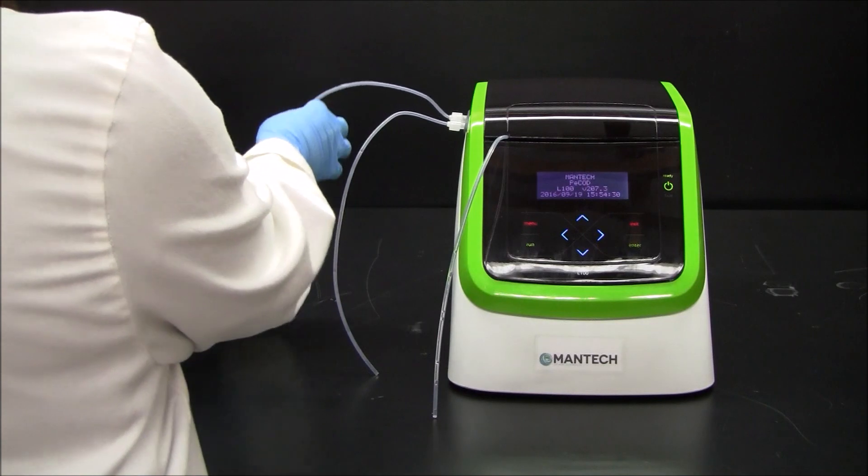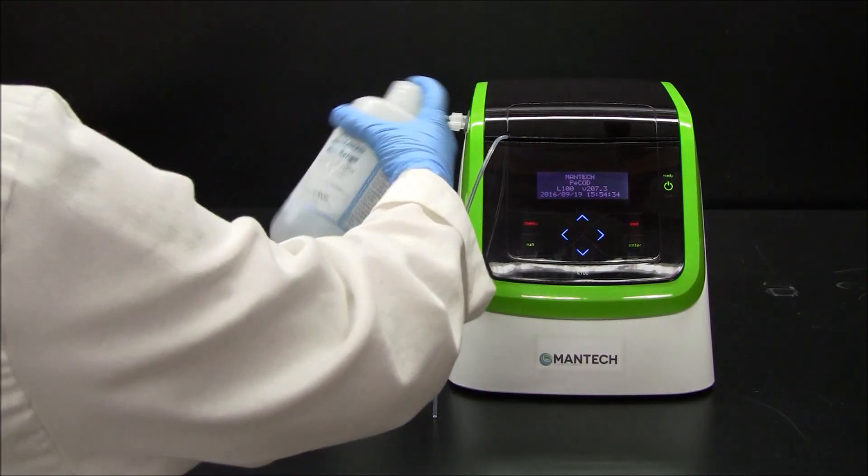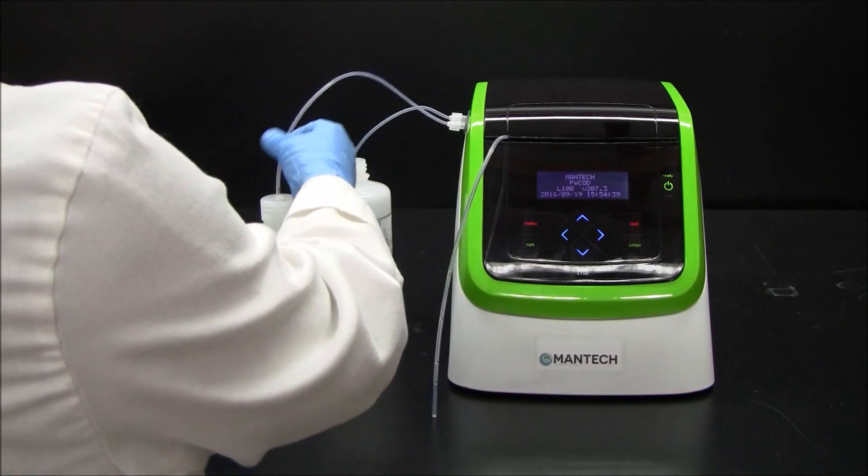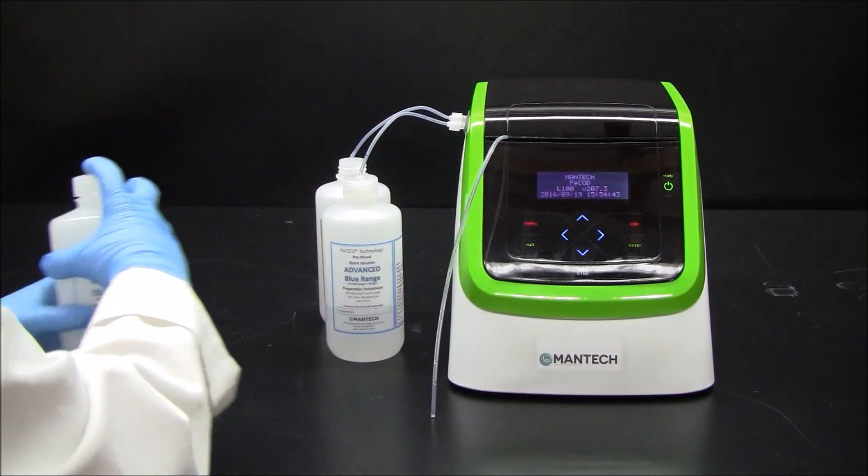Place the waste container at port W. Mix the blank and calibrant solutions as specified in the quick start guide. Invert several times to mix. Place the blank solution at port B and the calibrant solution at port A.